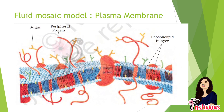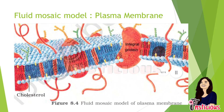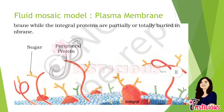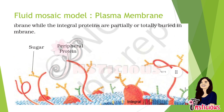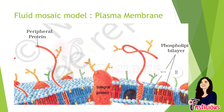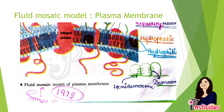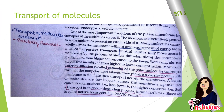Cholesterol in the cell membrane is important for liquidity and movement. The hydrophobic part is inside while the hydrophilic part is outside. Regarding cell junctions: if the attachment is horizontal, we call it a hemidesmosome, and if it is vertical, we call it a desmosome. In 1972, Singer and Nicholson gave the fluid mosaic model of the plasma membrane.